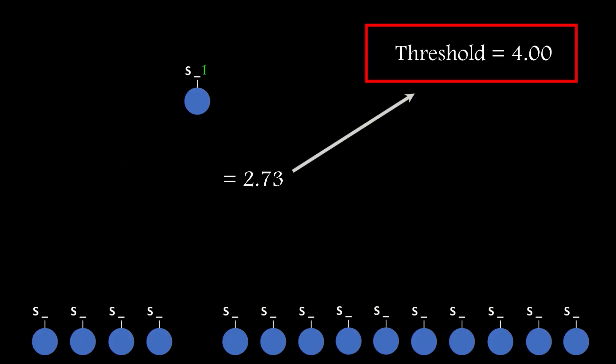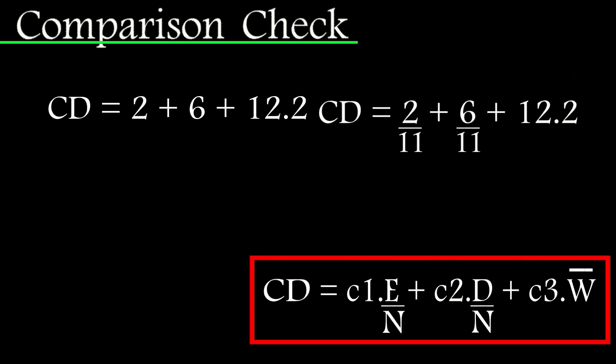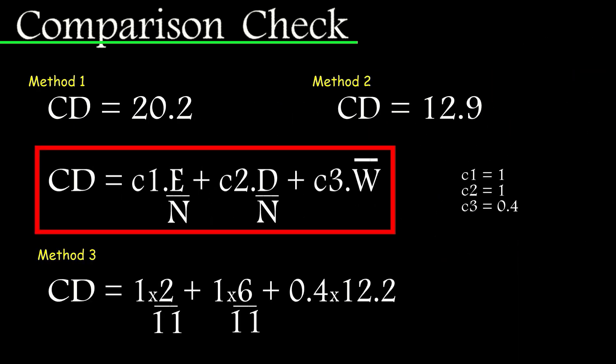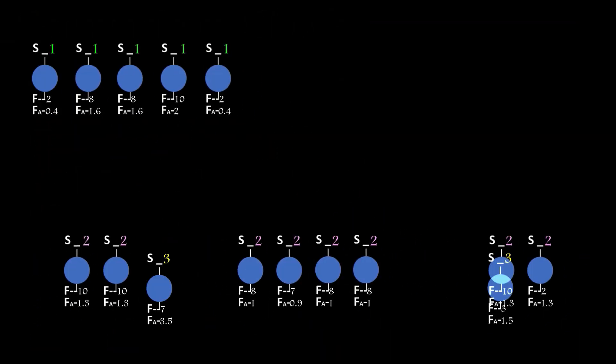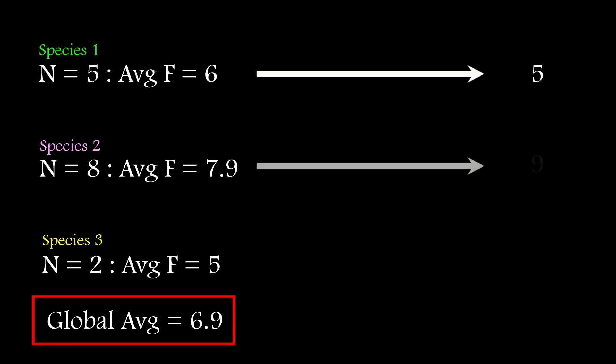I'm going to cover how individuals are selected for the species they're assigned to, how gene innovation IDs play into this, how and why the compatibility threshold varies in each generation, and why the target number of species we're trying to create doesn't always match up with the number of species that appear.